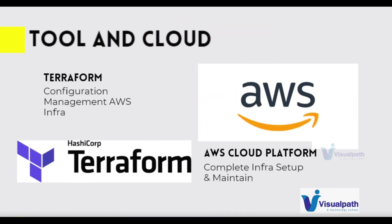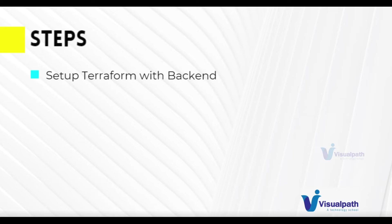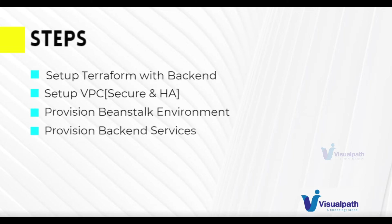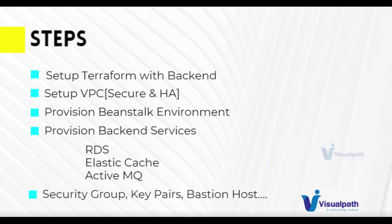We are going to use Terraform and AWS cloud computing platform to set up a complete infrastructure on AWS using Terraform — not only set it up, but also see how we maintain its state and deploy changes. Here are the steps: first, we'll set up Terraform with a backend for centralized state. Then we'll set up a VPC with NAT gateway, internet gateway, and subnets for a secure and highly available setup. We'll also provision an Elastic Beanstalk environment, RDS, ElastiCache, ActiveMQ, plus security groups, key pairs, and bastion hosts.